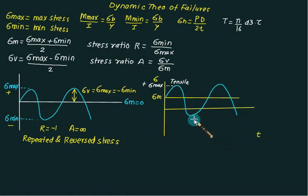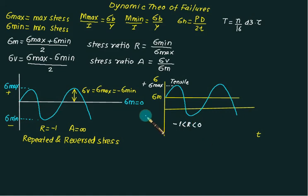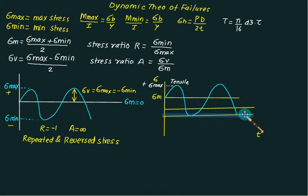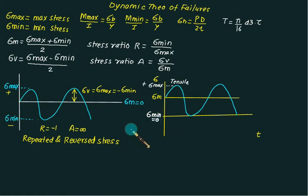If we shift the axis slightly above, sigma_min becomes a negative value (compression). In that case, the stress ratio will lie in the range −1 < R < 0, because sigma_min is compressive (negative). Likewise, we have a variety of cases. If the axis just touches the X axis, sigma_min will be equal to zero, and for this case stress ratio R will be equal to 0.